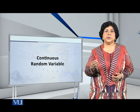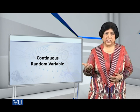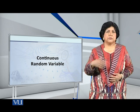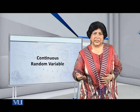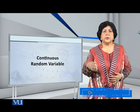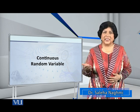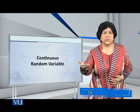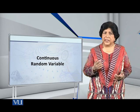A discrete random variable is encountered when we count things. For example, the number of heads that I'm going to get if I toss a coin four times — I may get no heads, one head, two heads, three heads, or four heads, and there is a probability for each, and after that they sum to one.